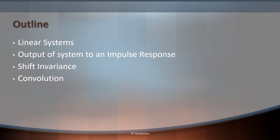We will start by defining first linear systems, followed by the discussion of the output of the system once an impulse response is applied. Then, we will discuss the definition of shift invariance, followed by a short introduction about convolution.